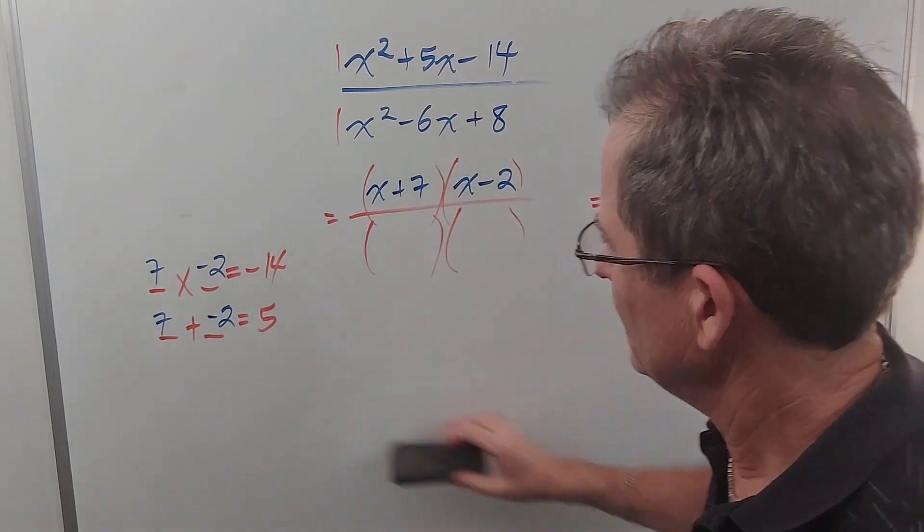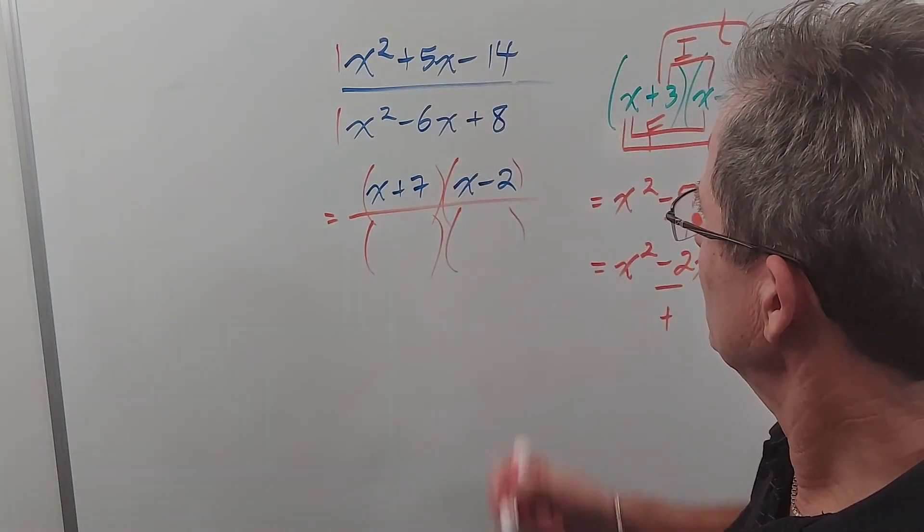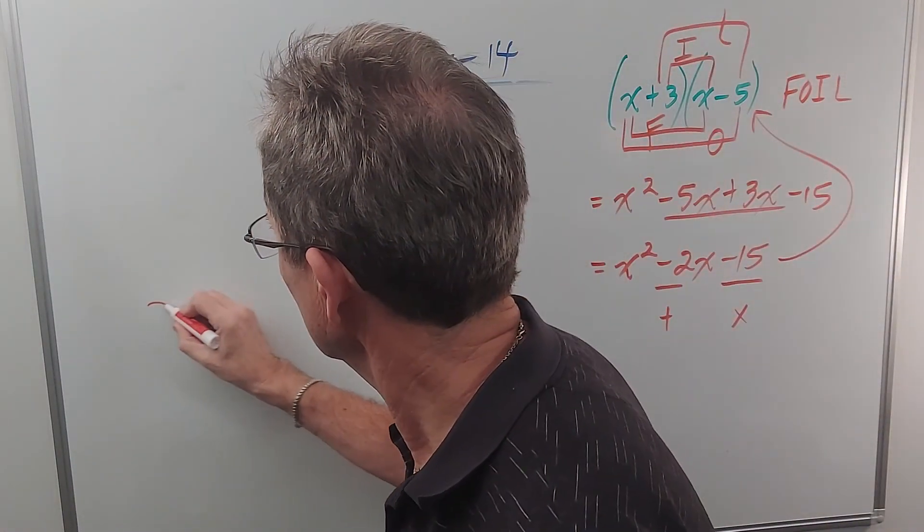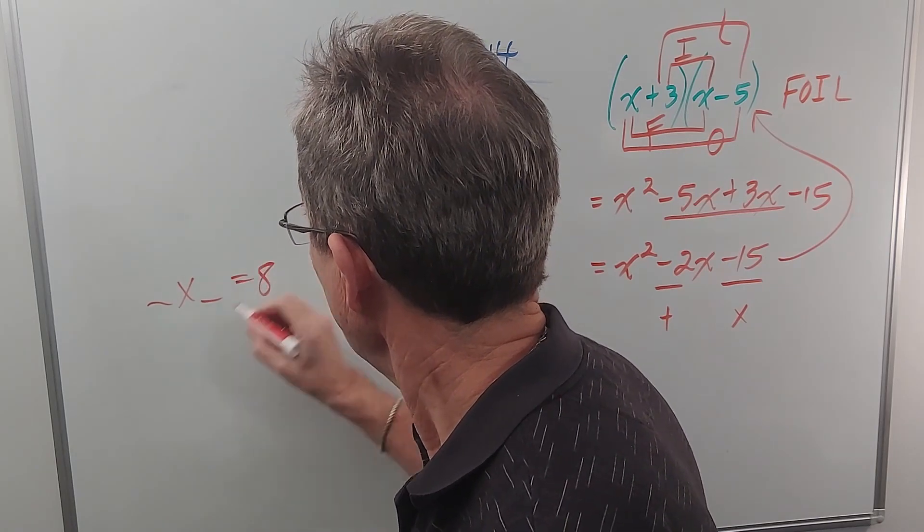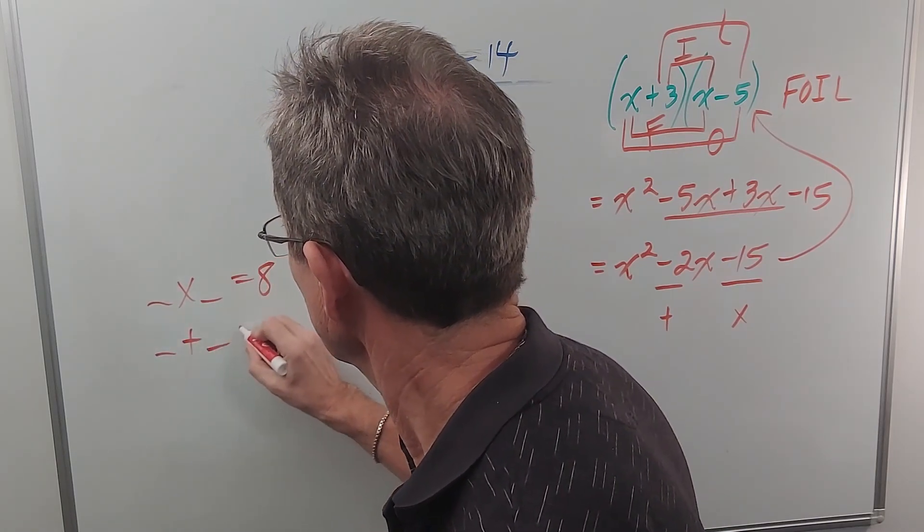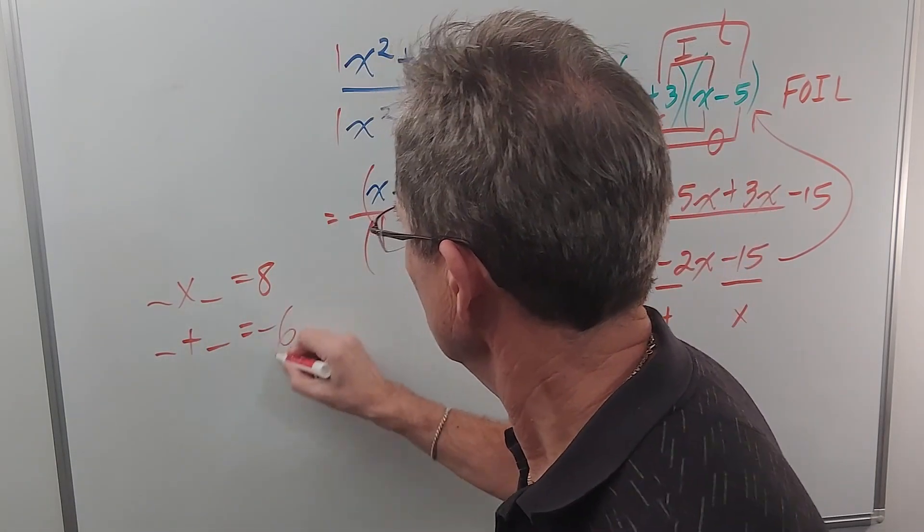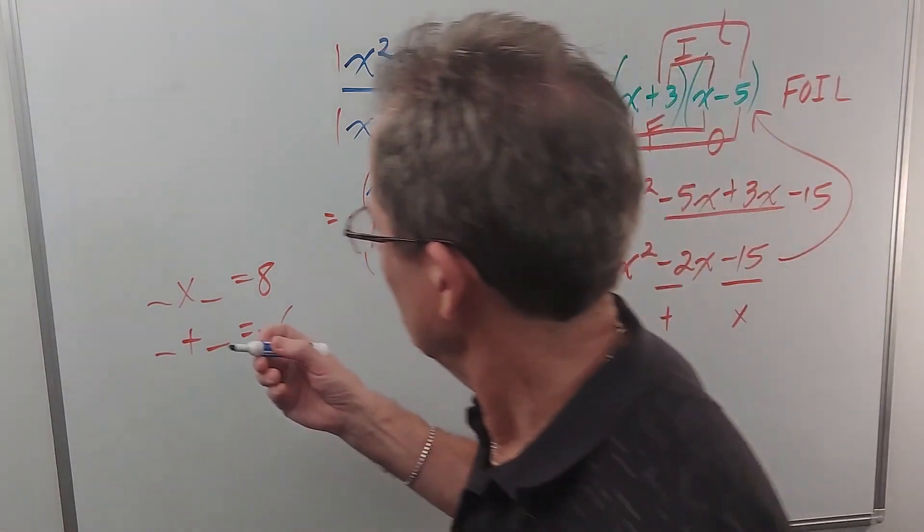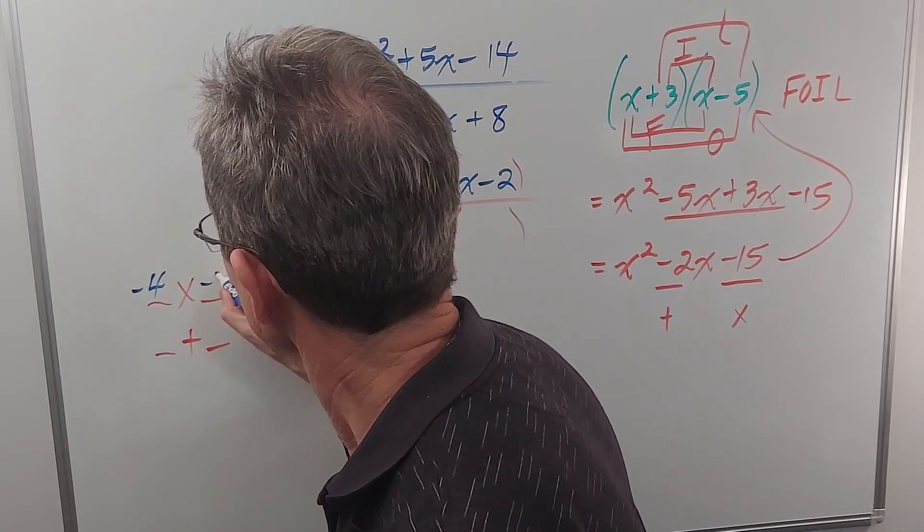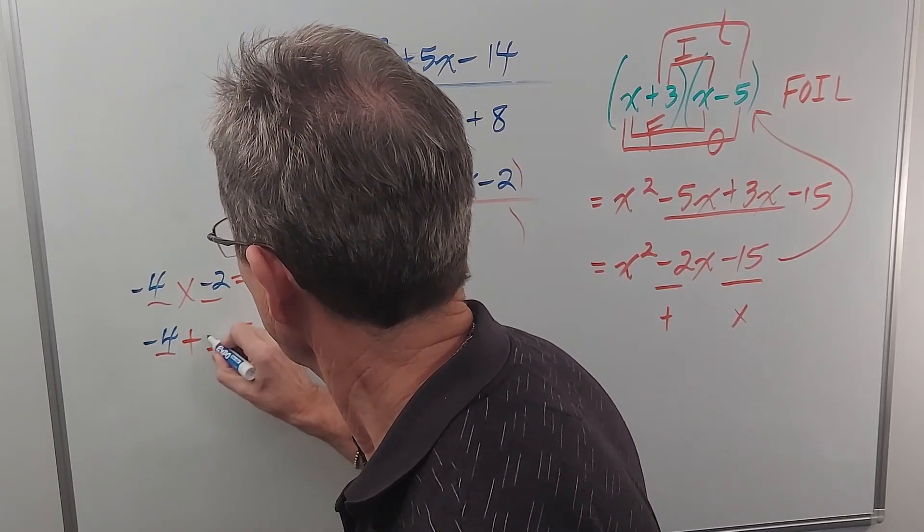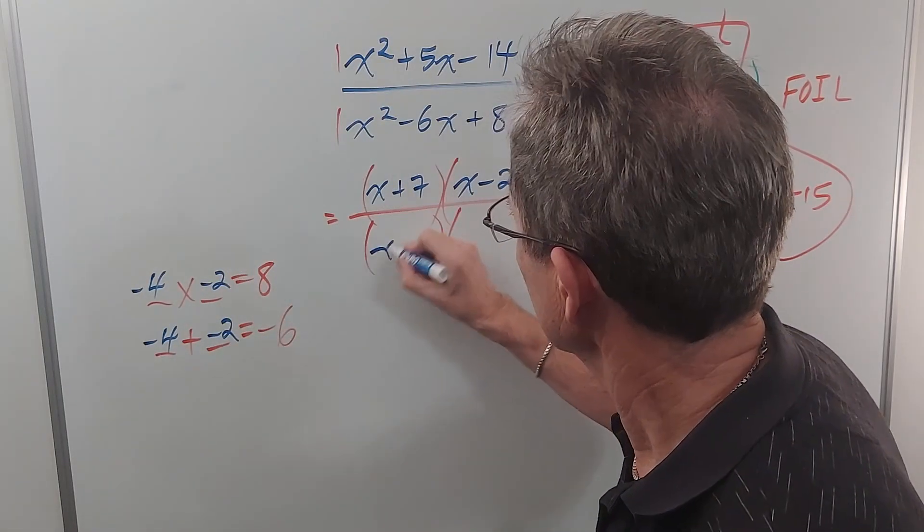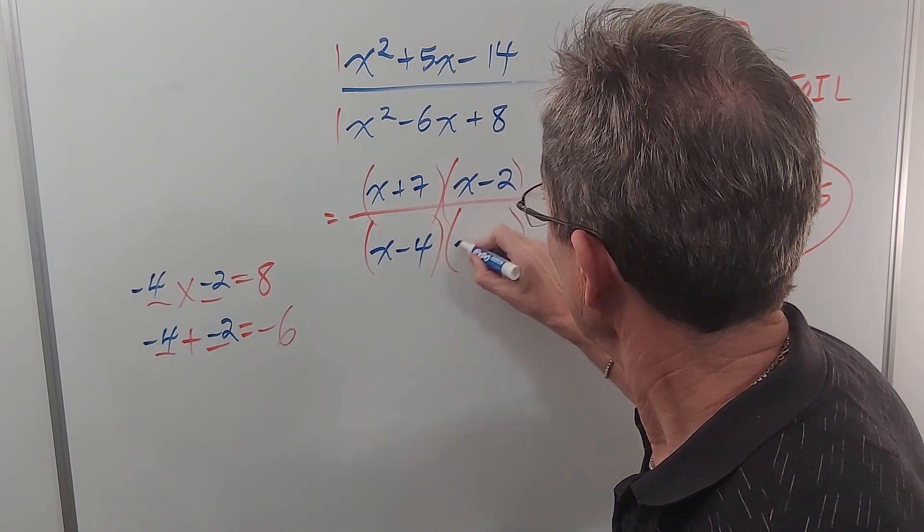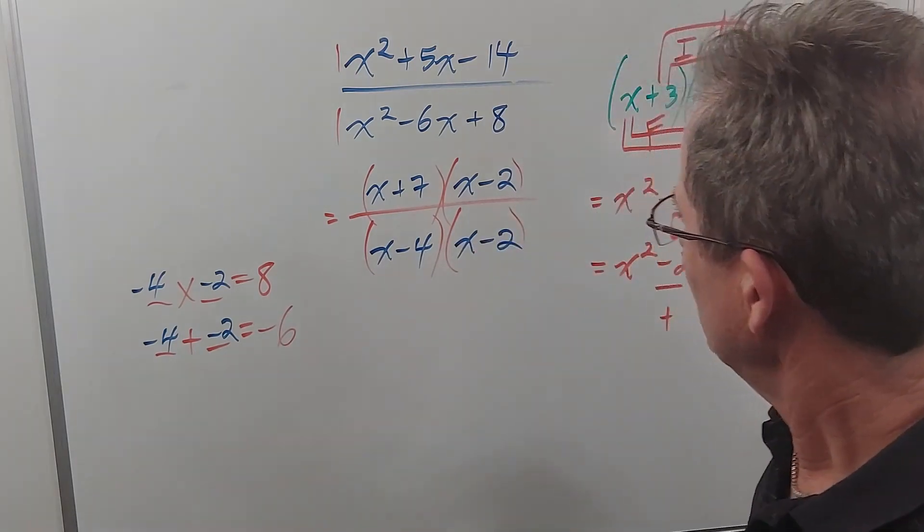And for the denominator, the two numbers must multiply to eight and add up to negative six. So if you take a moment to think about it, you should come up with negative four and negative two. So I get x minus four and x minus two.